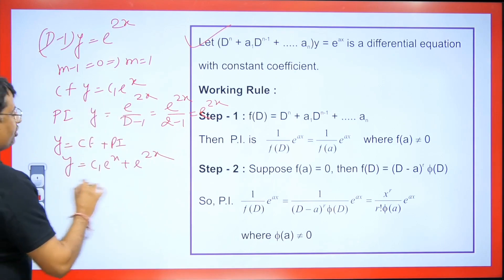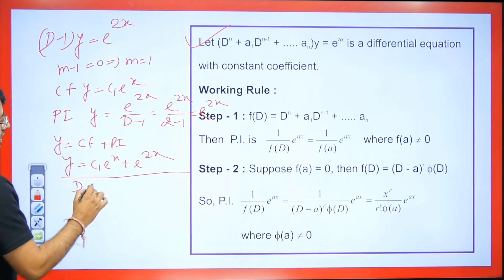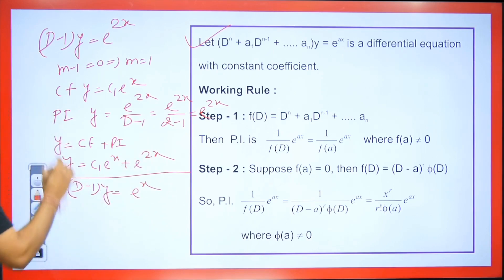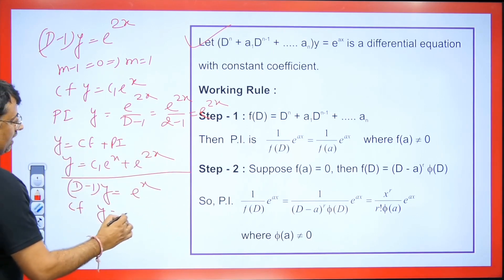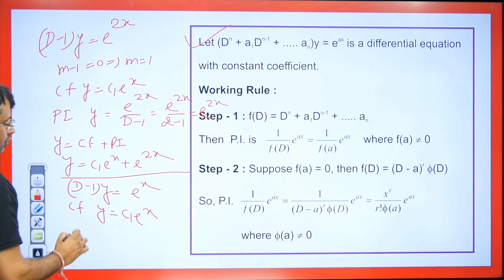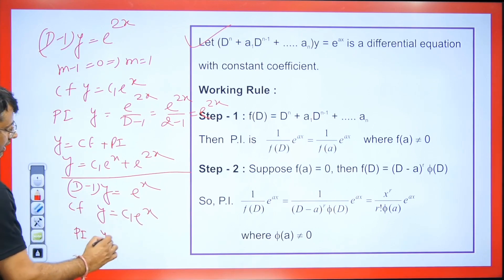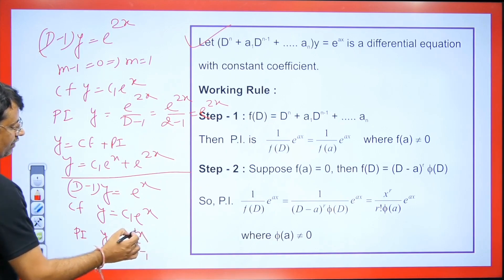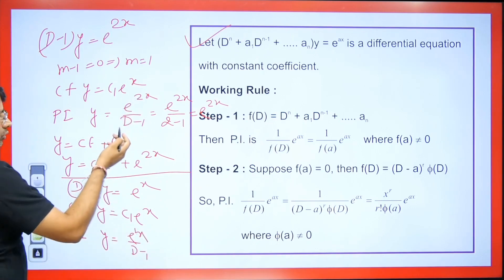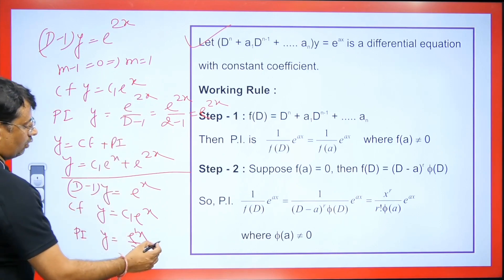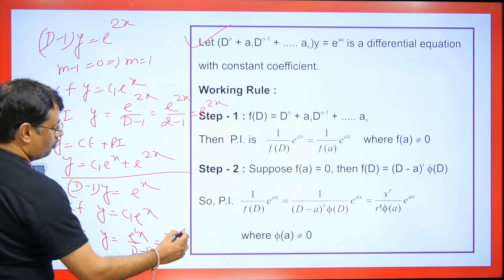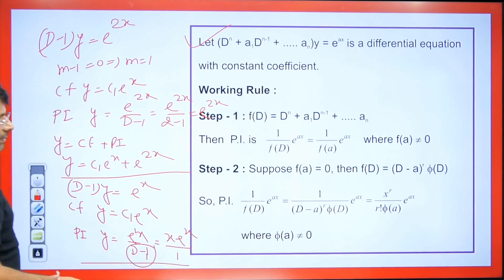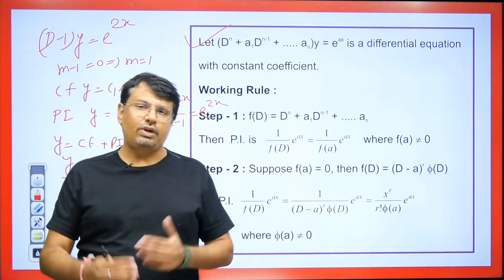If the equation changes to (D−1)y = e^x, the CF remains c₁e^x. For the PI, we write e^x/(D−1) and replace D with 1, but the denominator becomes 1−1 = 0. In that case, we multiply the numerator by x and differentiate the denominator with respect to D, giving e^x/1 = xe^x. The final answer is CF plus PI.